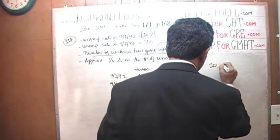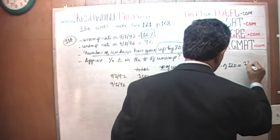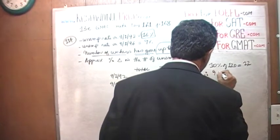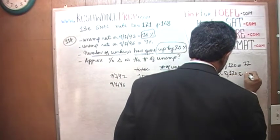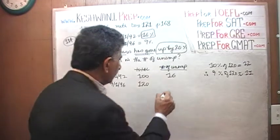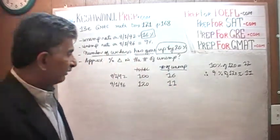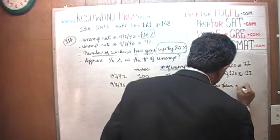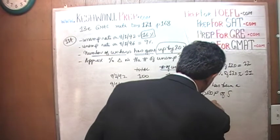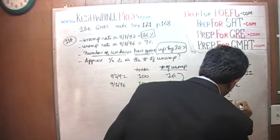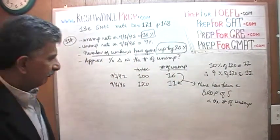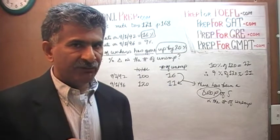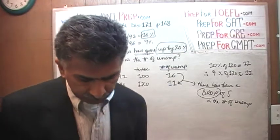Let's do it. We know that 10% of 120 is 12 — just drop a zero. Therefore, 9% of 120 is going to be approximately 11. So now we see that there has been a drop of 5 in the number of unemployed. We emphasize the word drop here because any answer choice — since they are asking about percentage change — that mentions the word increase or rise is the wrong answer.